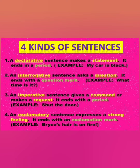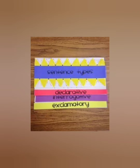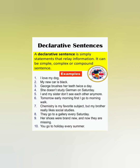A declarative sentence ends as a simple sentence. A declarative sentence has an affirmative sentence and a negative sentence — that means a positive sentence and a negative sentence. Examples: 'I love my dog.' 'Chemistry is my favourite subject.' 'But my brother really likes social studies.' 'They go to the gallery every Sunday.' 'You go on holiday every summer.' Here we cannot see any kind of command, request, or suggestion — it is just a simple statement.